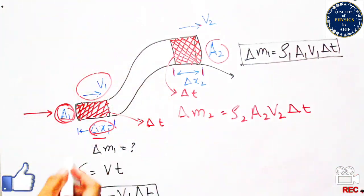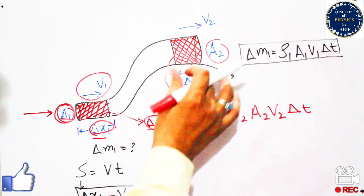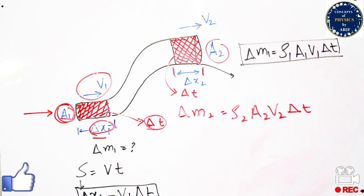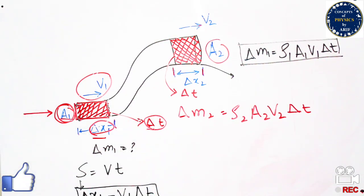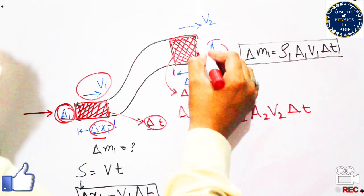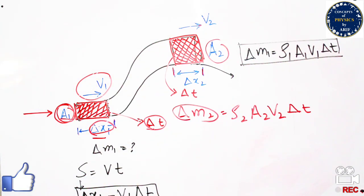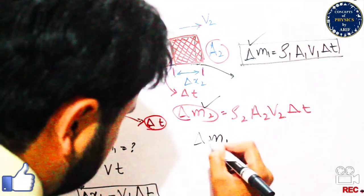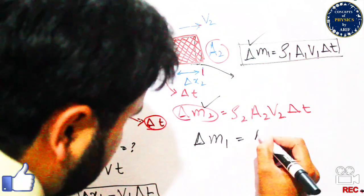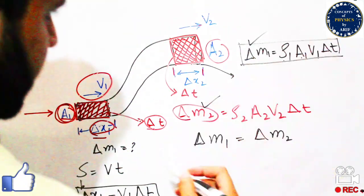The time interval delta t remains the same for both regions. Our condition is that these two masses are equal, because the fluid is incompressible and this is a steady, streamline flow. So we equate the two masses: delta m1 equals delta m2, giving rho1 times A1 times v1 times delta t equals rho2 times A2 times v2 times delta t.